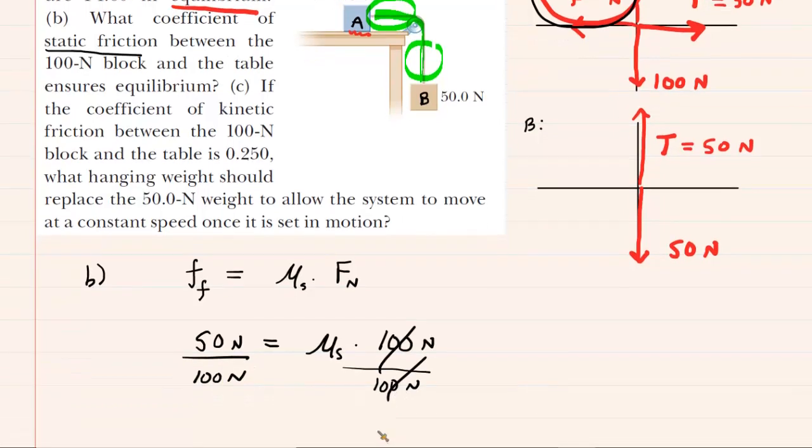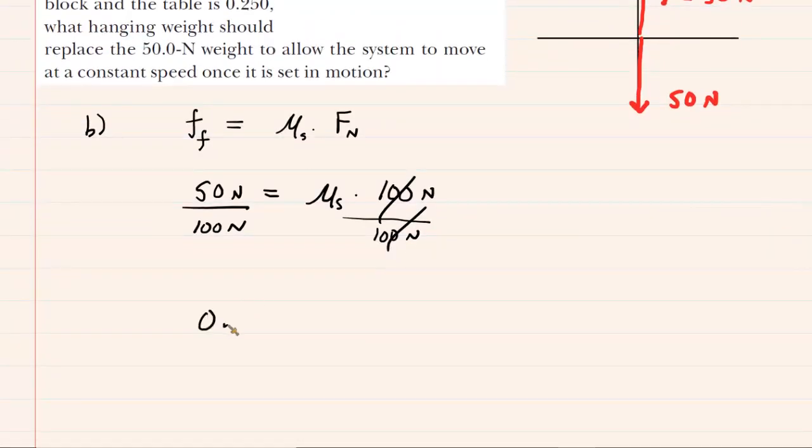And we can see that the coefficient of static friction in this case is equal to 0.50. It is a dimensionless answer because the newtons will cancel out. So that is the correct answer to part B.